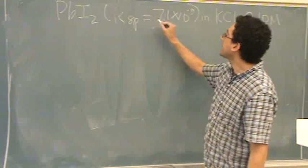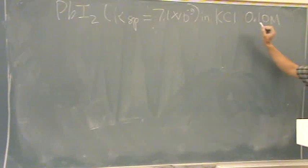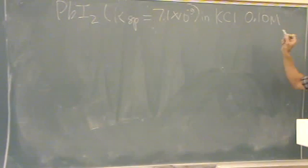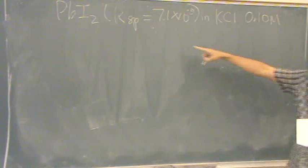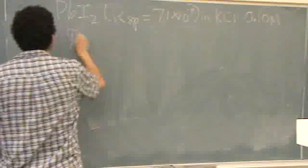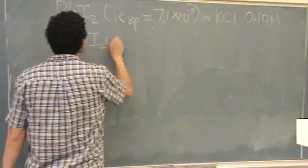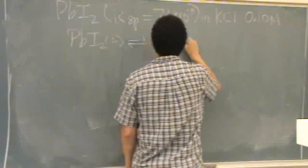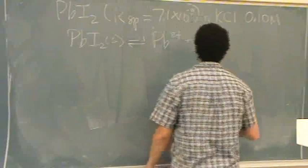So we'll have lead iodide, there's the Ksp, in potassium chloride, it's 0.10 molar. I want the molar solubility of this. Okay, there's a question. So you go lead iodide, write out the Ksp, is lead 2 plus, plus 2 I minus.